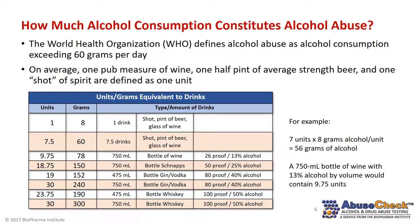Let's start by understanding what alcohol abuse is, or how it may be defined. How much alcohol do you have to consume in order to have a problem? Of course the effects of alcohol on individuals can vary, but there are some accepted standards. The World Health Organization (WHO) defines alcohol abuse as alcohol consumption that exceeds 60 grams of alcohol per day. You can see examples of different types of alcoholic beverages and the corresponding alcohol amounts. On average, a drink corresponds to eight grams of alcohol, so consuming seven to eight alcoholic drinks per day on a consistent basis can constitute alcohol abuse.